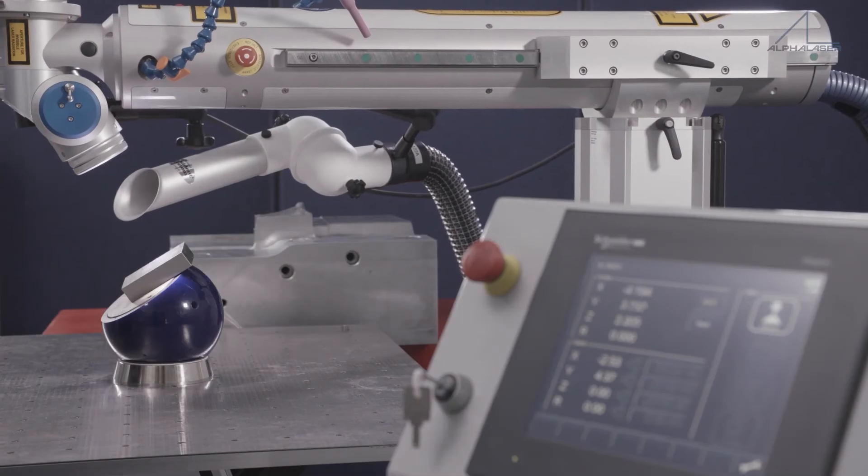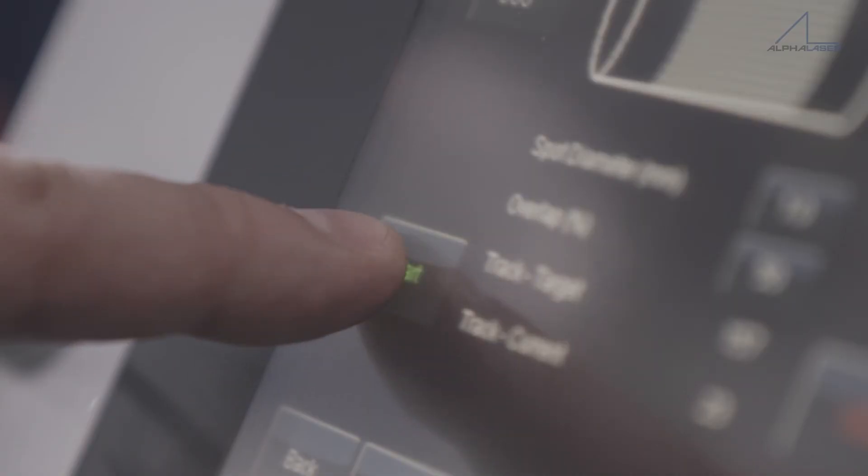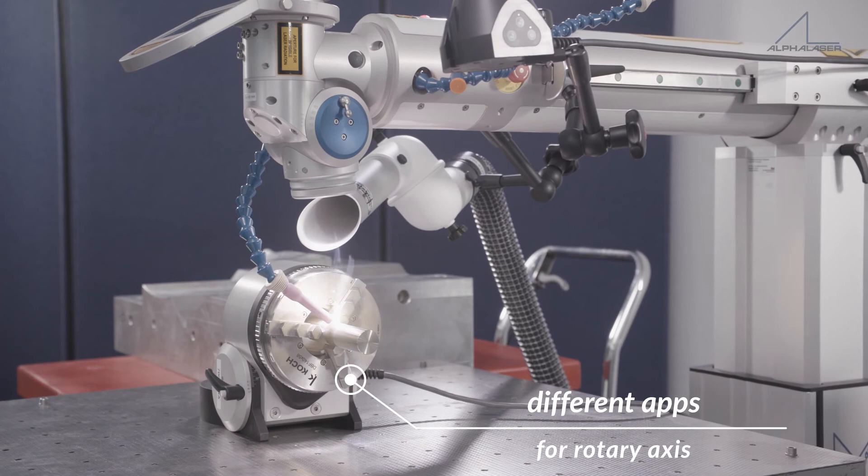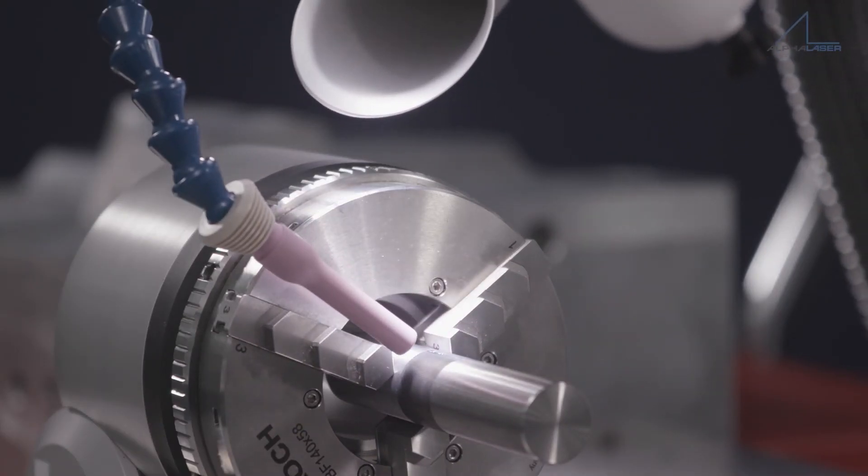But that is not the only interesting software feature. There are apps for the rotary axis for welding on jacket surfaces. Even a fully automatic wire feeding system can be included in the configuration.